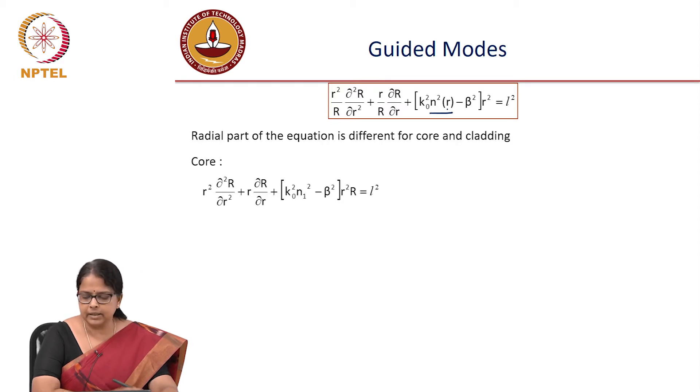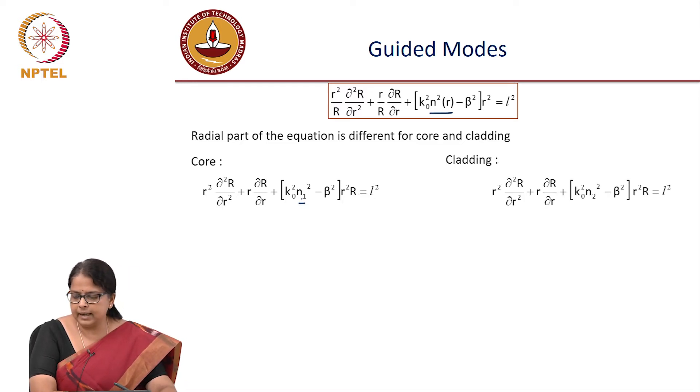Even in graded index fiber you can write one in core and one in cladding, but in graded index fiber you will not have n1 square, you will have the n as a function of r here again. It could be a parabolic profile or depending on what profile you have. So core you have this, cladding you have the two separate equations.